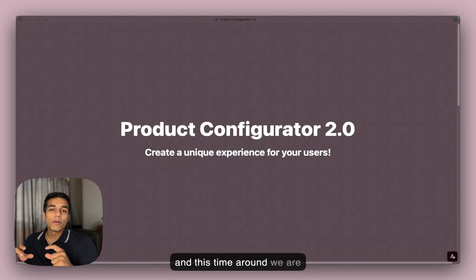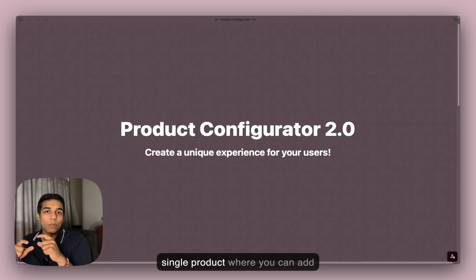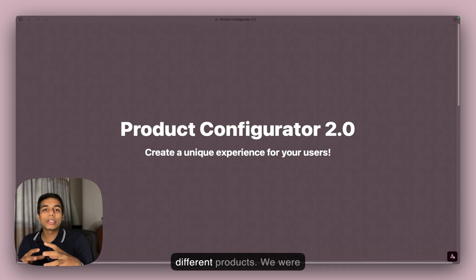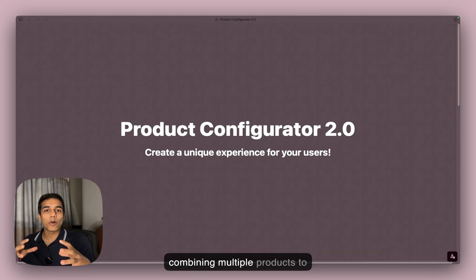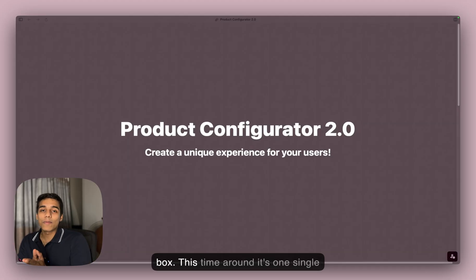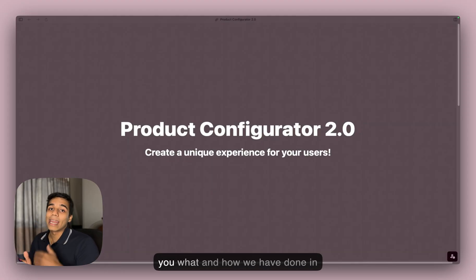This time around, we are creating a configurator for one single product where you can add different options. In the previous one, we were merging different products — combining multiple products to create a box where users can add multiple products and at the end it creates a box. This time, it's one single product with different options, but with an amazing user experience. So let's jump right into it, and then I'll show you what we have done in the back end.